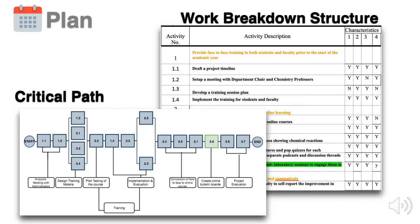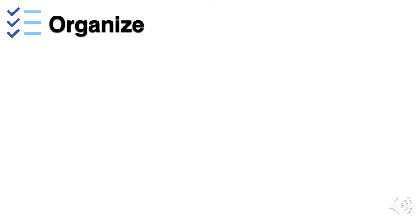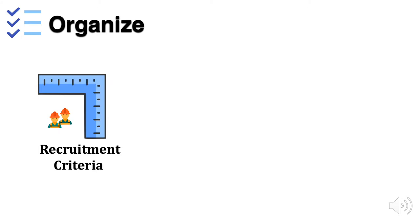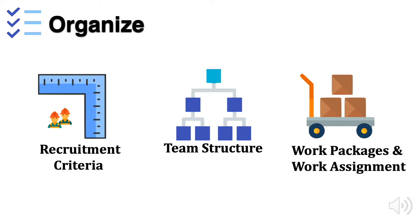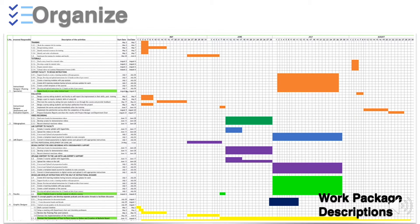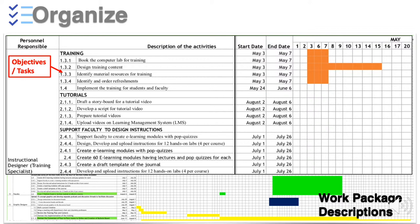We use the critical path to identify the sequence of activities through the network. For example, 1.1 happens before 1.2; 1.3 to 3.4 means those four activities are implemented at the same time. Work package descriptions break down the broader objective into sub-objectives. Detailing these sub-objectives or tasks helps our team to assign work based on people's expertise and keep track of who is responsible for doing what and by when.